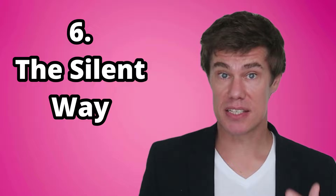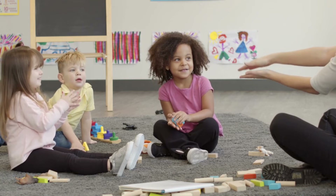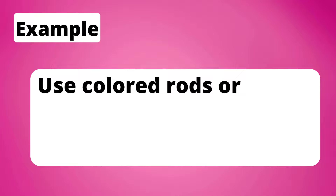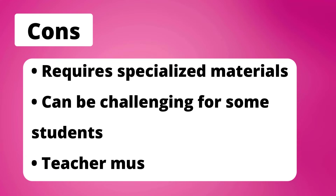The silent way is an innovative approach that emphasizes learner autonomy and discovery. In this method, teachers limit their verbal input and instead use visual aids and cues to guide students in discovering language patterns and rules on their own. It encourages active problem-solving and critical thinking skills, promoting a deep understanding of the language. Example: use colored rods or charts to demonstrate language patterns. Pros: encourages critical thinking, fosters self-discovery, builds problem-solving skills. Cons: requires specialized materials, can be challenging for some students, and a teacher must be highly skilled.